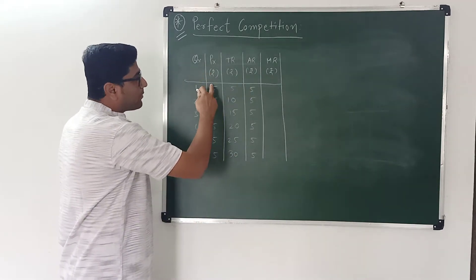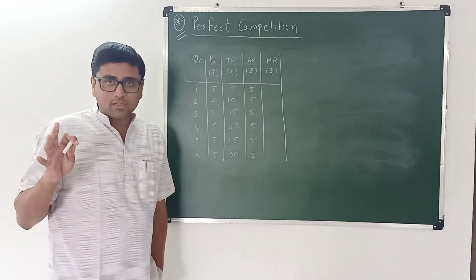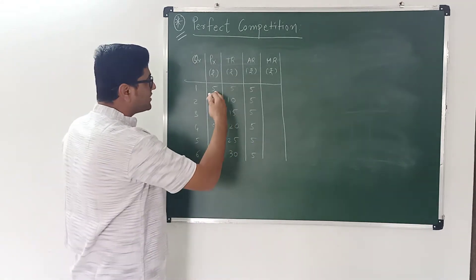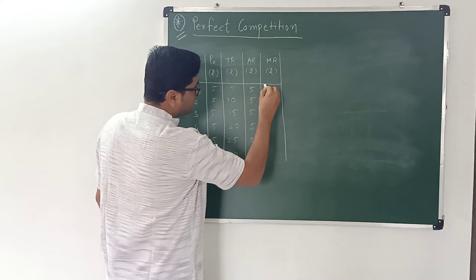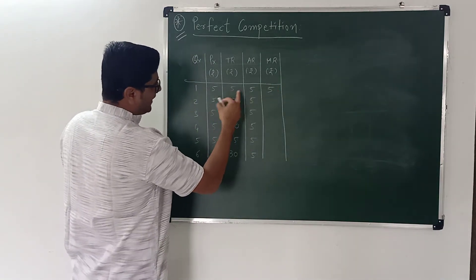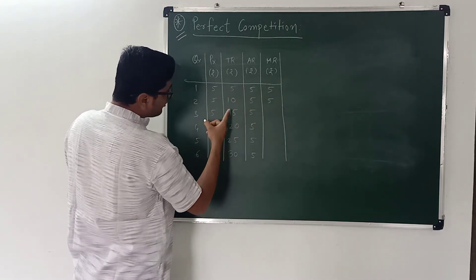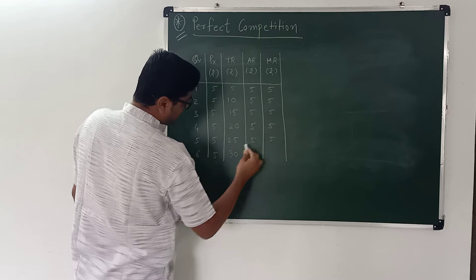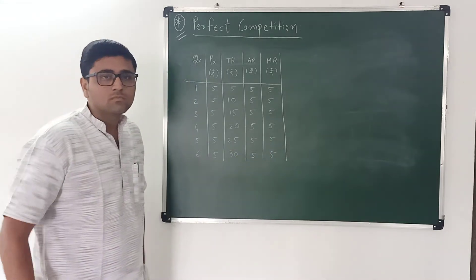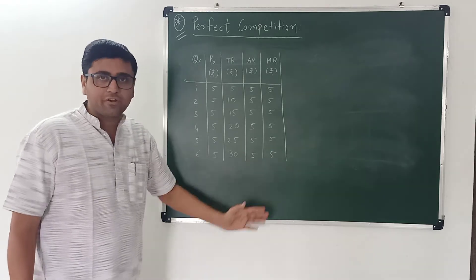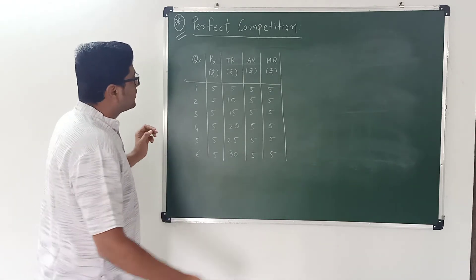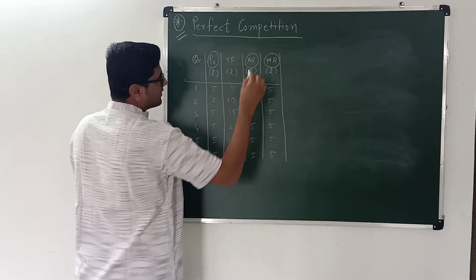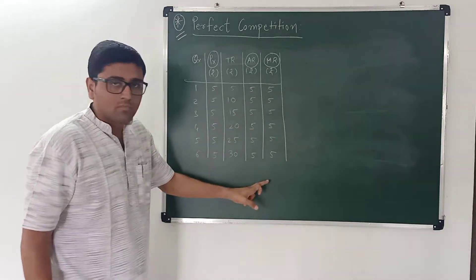Average revenue and price are always equal. Now, marginal revenue shows the change in total revenue. So marginal revenue is also 5 for each unit: 5, 5, 5, 5, 5, 5. So here price, average revenue, and marginal revenue are the same.